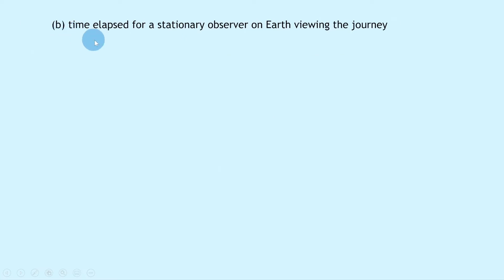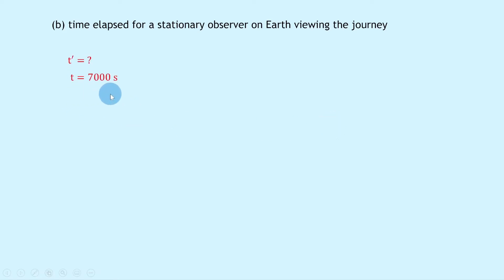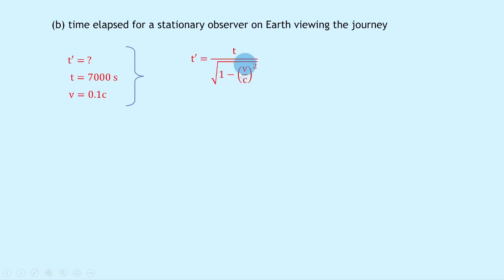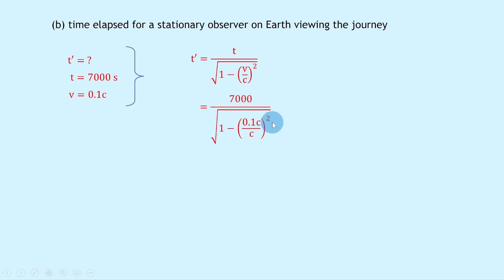Part B says to calculate the time elapsed for a stationary observer on Earth viewing the journey. Because the observer on Earth is not in the frame of reference of the event and is far away from it, they will measure the relativistic or dilated time t'. We know the proper time t is 7,000 seconds from Part A and v = 0.1c. Writing down our time dilation equation: t' = t divided by the square root of (1 minus v over c squared). Substituting in gives 7,000 divided by the square root of (1 minus 0.1 squared), and putting that into the calculator gives 7,035 seconds.